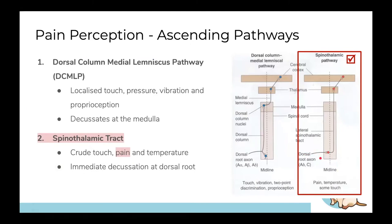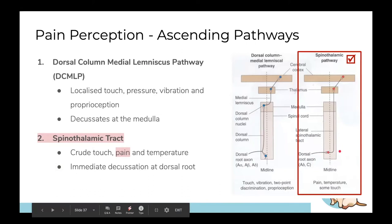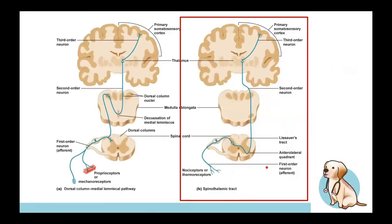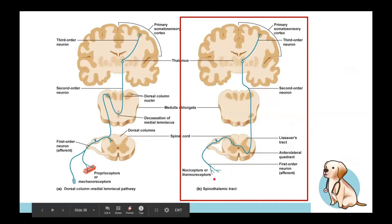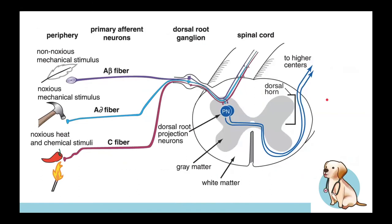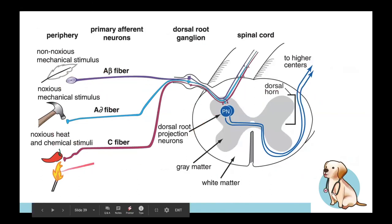The spinothalamic decussation is immediate — unlike the dorsal column medial lemniscus pathway, which travels up, reaches the medulla, and then decussates. Pain decussates at the point of the spinal cord. Starting from nociceptors, the signal decussates in the spinal cord and travels all the way up, synapsing at the sensory cortex.